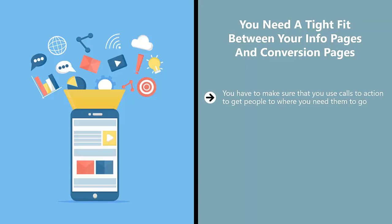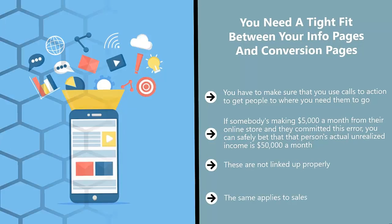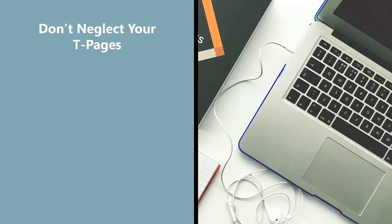Unfortunately, when many marketers set up K and L pages, they skip T pages — and this is often a fatal mistake. If somebody is making five thousand dollars a month from their online store and they committed this error, you can safely bet their actual unrealized income is fifty thousand dollars a month. A lot is lost because they skipped a vital part of the sales conversion process. Think of it like the plumbing in your home: if you have a faulty pipe, regardless of how much water comes through, by the time it reaches the faucet you'll only get a dribble.